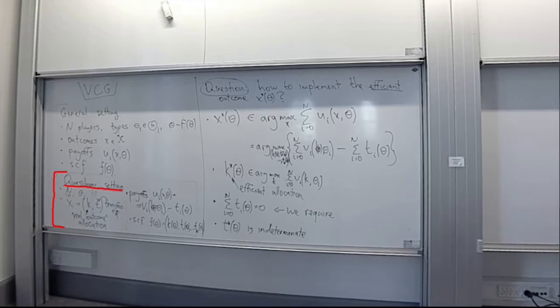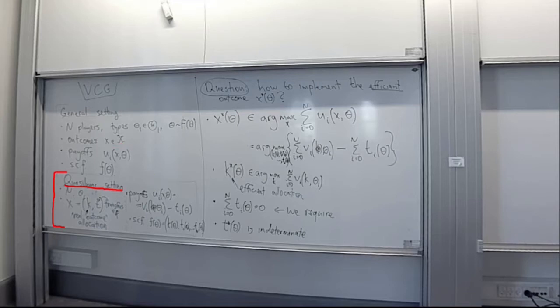The initial elements of this quasi-linear setting are just as before — we have some collection of players who have some respective types theta. This first part is the same as in the general setting. However, now we impose some extra structure on our set of outcomes. Rather than the set of outcomes x being a generic set, we now split it into two dimensions, and we say that any generic outcome x is a pair of k and t.